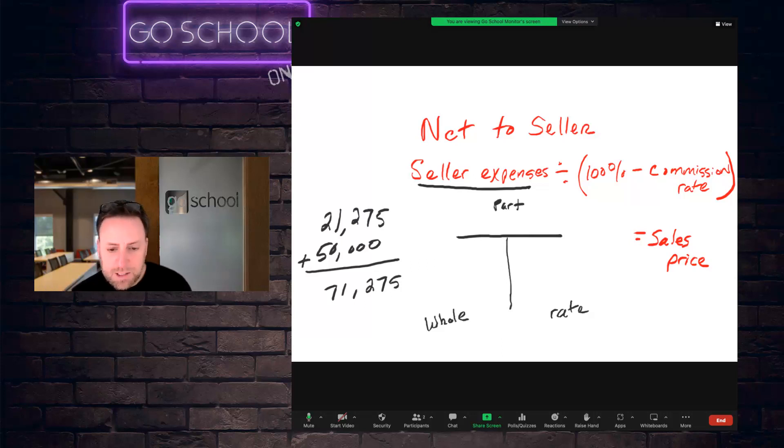Is seller expenses considered the whole or the part? Well, it's going to be, in this case, considered a part because the question is asking us to solve for the sales price, which is what the whole is. So this is what we've got to solve for. We've got the part of $71,275. That is the mortgage payoff and the net proceeds to the seller.